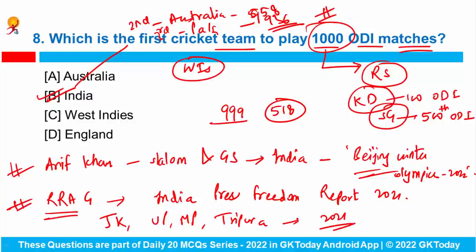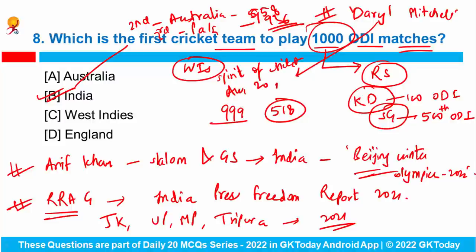Do remember that New Zealand's Daryl Mitchell has recently been named the recipient of the ICC Spirit of Cricket Award 2021 for his significant gesture during the T20 World Cup semi-final when played versus England.